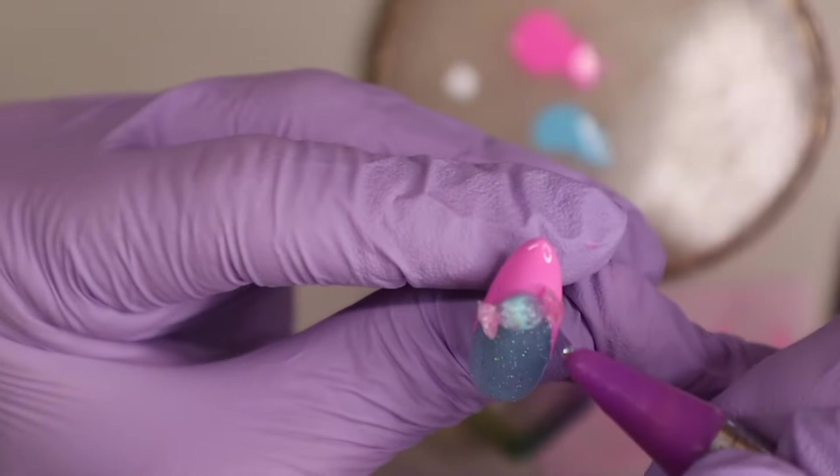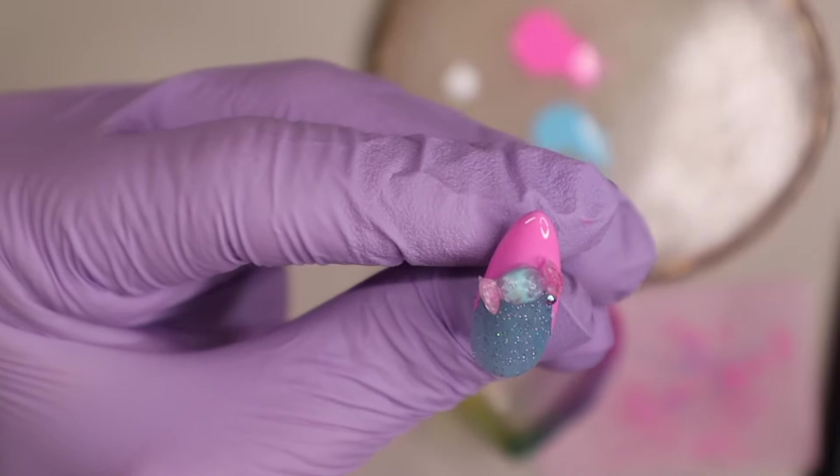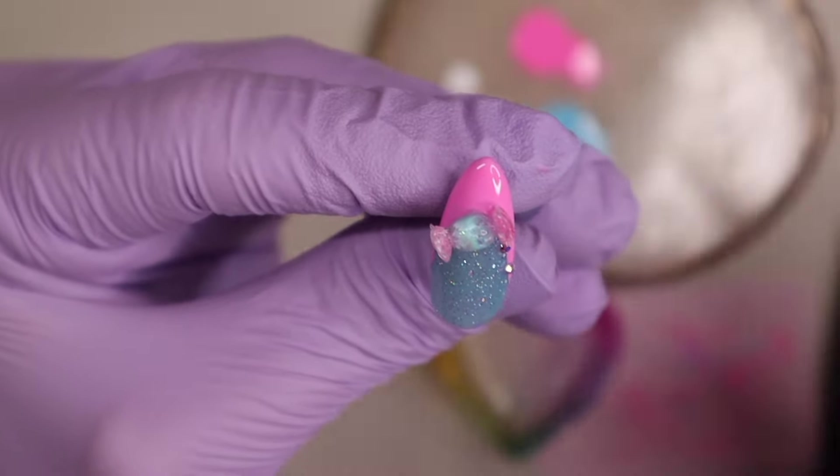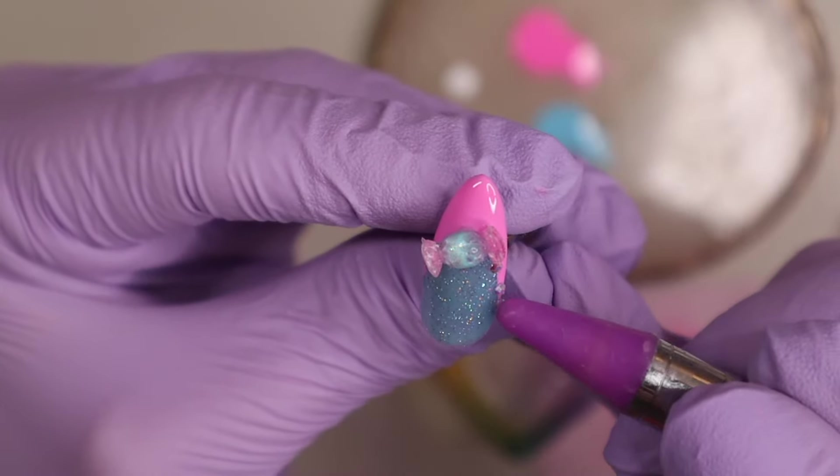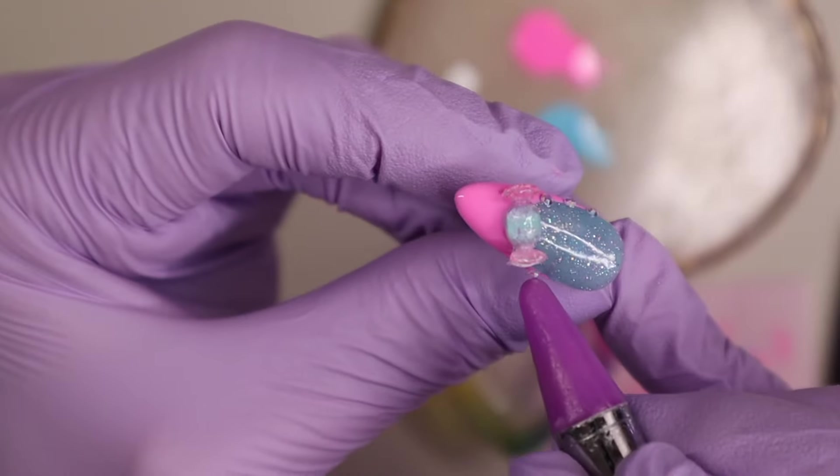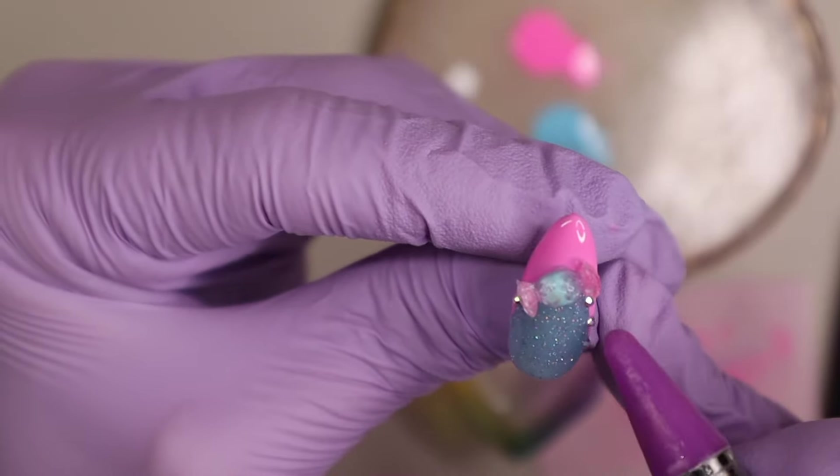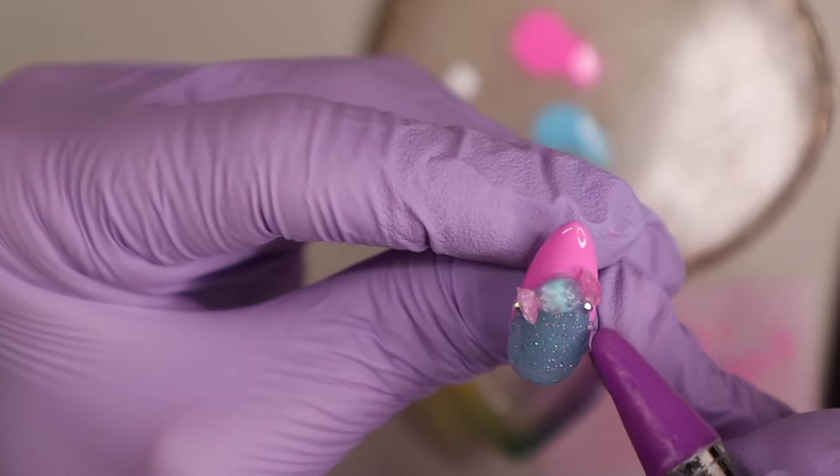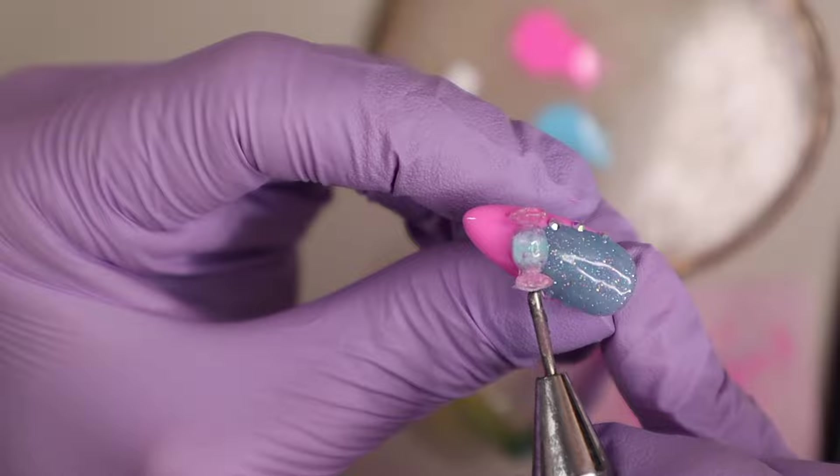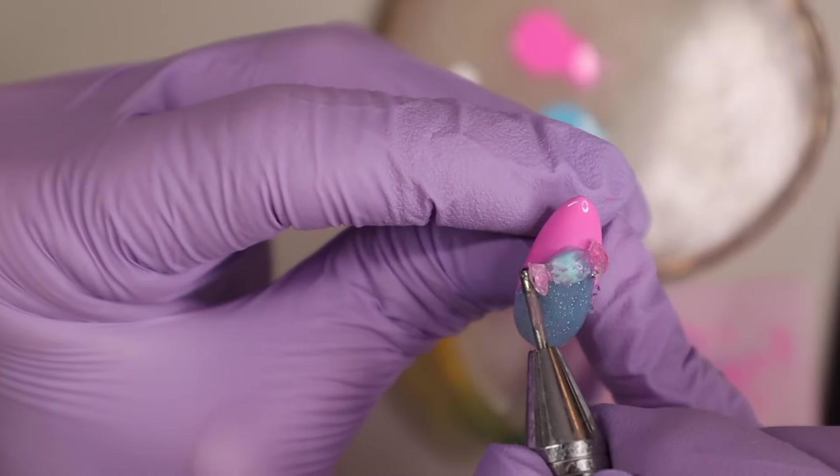For the finishing touch on this nail before we go in with top coat, I am taking these tiny iridescent rhinestones and spacing them out a bit down the rest of the French tip here. I thought that they kind of reminded me of candy just because of the coloring in them and I thought it would just add a little extra pizzazz to the French tips.